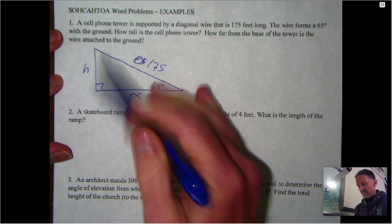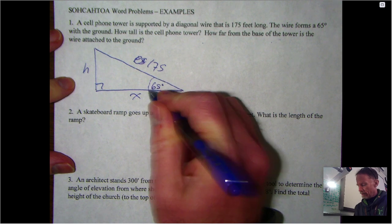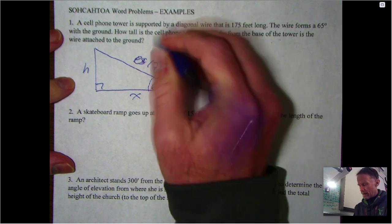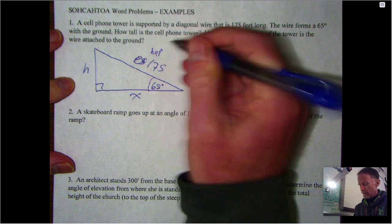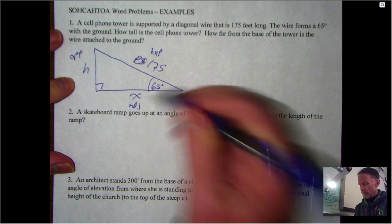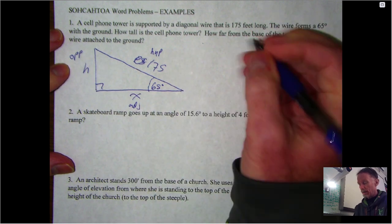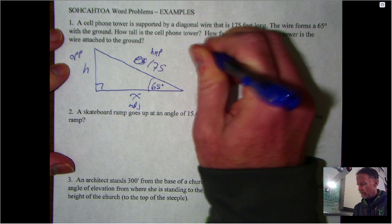What do we do? Doesn't matter which one you find first; I'll find the height first. Once you know your angle, label things. I know that's the hypotenuse, I know that's the opposite, I know that'll be the adjacent. So if I'm finding my height first, opposite and hypotenuse - that tells me I'm going to use sine.